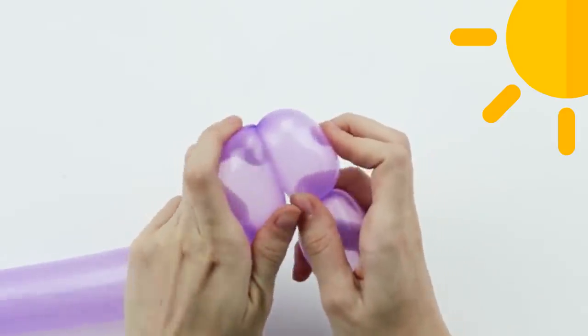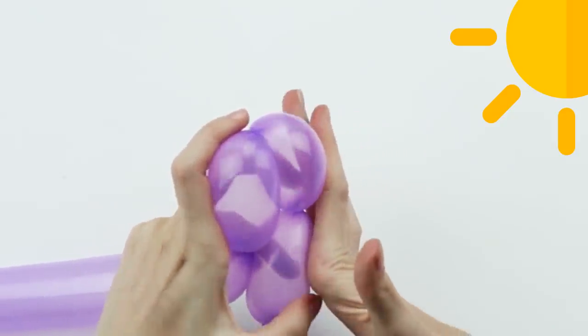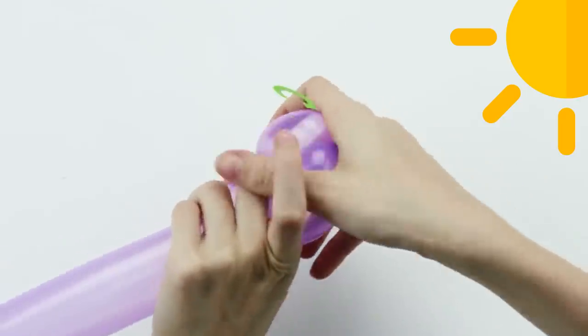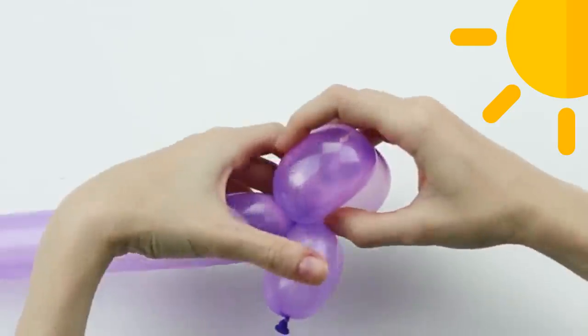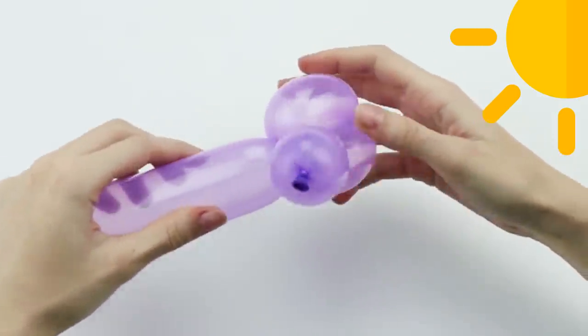Twist the ear segments together. Use your free hand to grasp the second and third segments, the ear segments, and twist them together three times. This lock twist will keep them from untwisting. Do you see the dog's head?